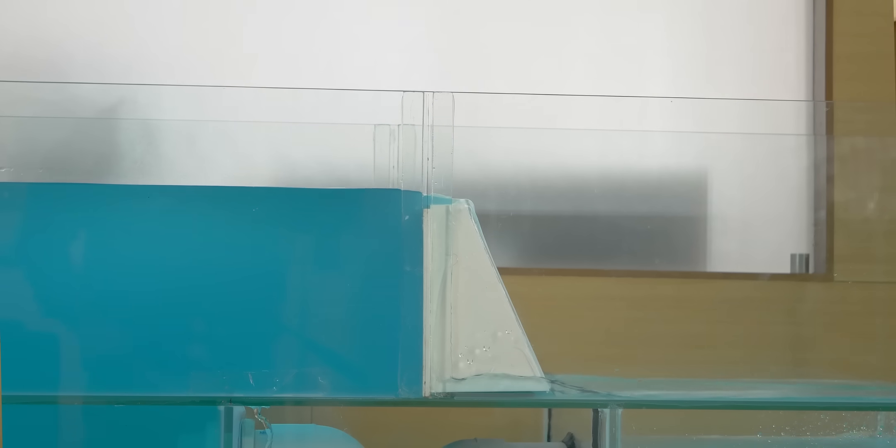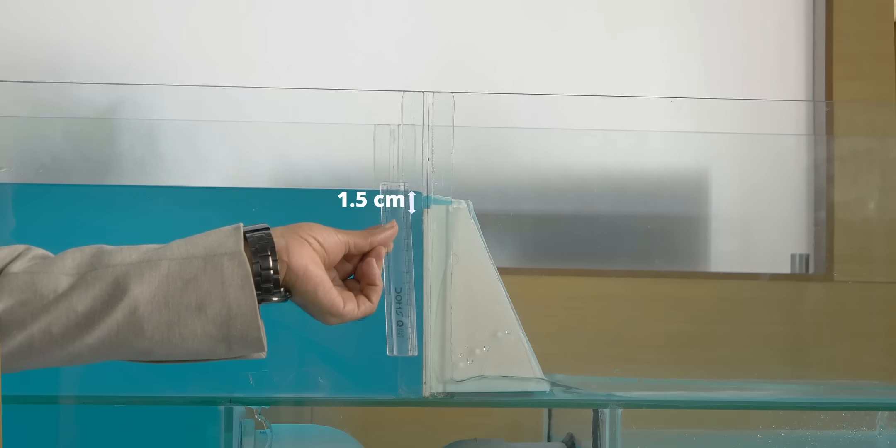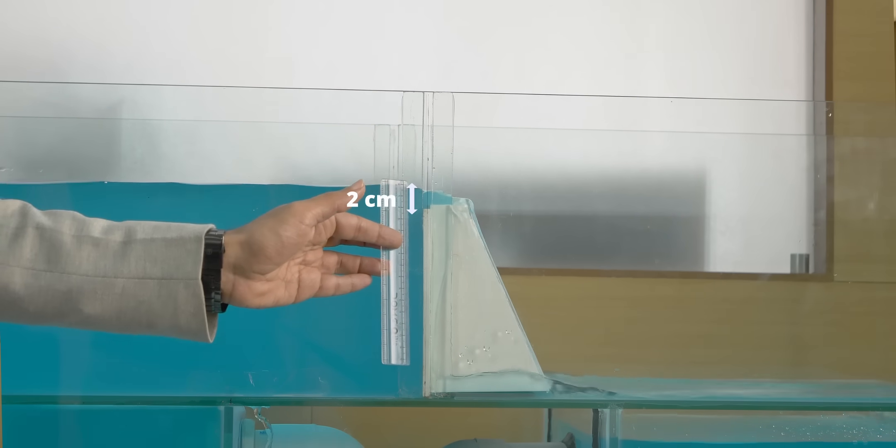And you can see that the water level height above the notch level is just 8 mm. Now let's increase the water flow rate. With the increased water flow rate, the height above the notch level is around 1.5 cm. Now let's go for the maximum water flow rate. Now the water is flowing around 2 cm above the notch level.